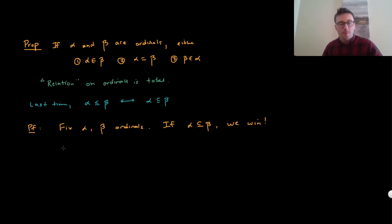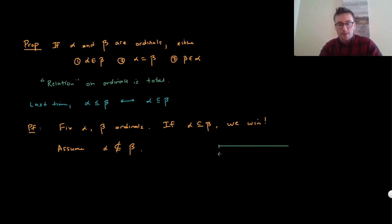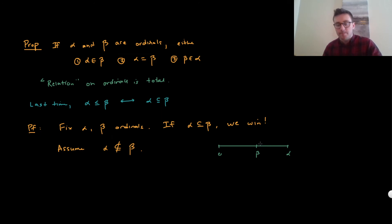So what we're going to do is assume that alpha is not a subset of beta. We're going to try to argue that alpha is bigger than beta — in other words, beta is an element of alpha. If it's the case that alpha is not a subset of beta, there has to be some element of alpha that's not an element of beta. We'll call this gamma — specifically, gamma will be the least element of alpha that's not an element of beta.